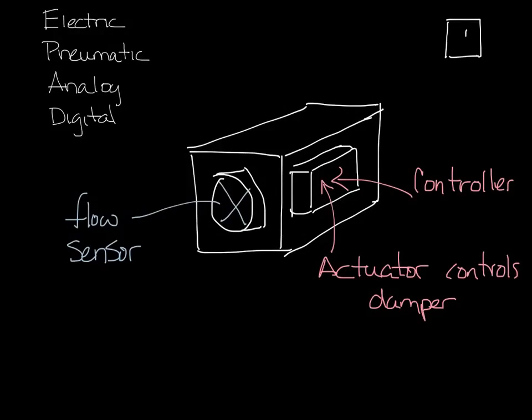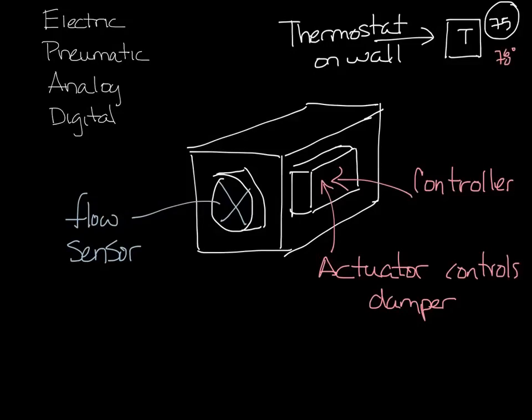Somewhere in the room there'll be a thermostat. The thermostat sets the set point and measures the room temperature. So say you have a set point of 75 degrees and your space is 78 degrees. It sends that information to the controller. The controller then says, hey we need more air and it'll send it to the actuator to open the damper.